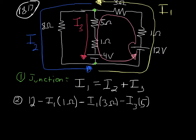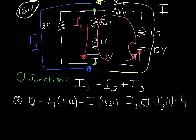Continuing the loop, going down through the 1-ohm resistor in the same direction as the current — current is also going down — so I have a negative again: minus I3 times 1. Then I hit the positive terminal of a battery and need to jump down to the negative, subtracting 4 volts — so this is minus 4 volts. Then I follow my loop back to where I started, and the whole thing equals zero.